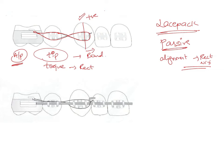In extraction cases and certain non-extraction cases, we don't want the canine to move anteriorly because ultimately we have to retract it — if it first moves forward and then posteriorly, that's a double motion we want to avoid. To prevent this anterior movement of the canine due to tip expression, we give a lace back, which is also known as a figure of eight ligature because of its appearance.